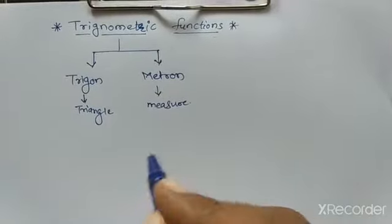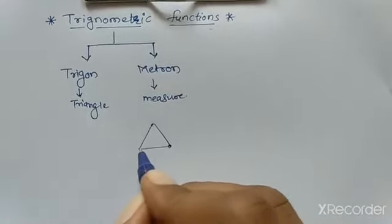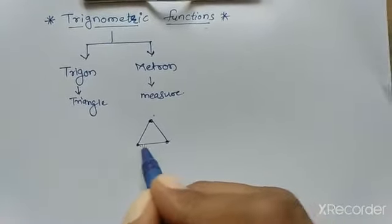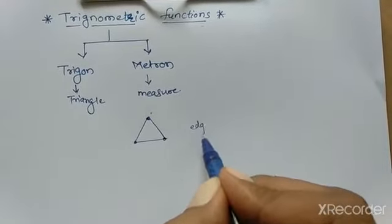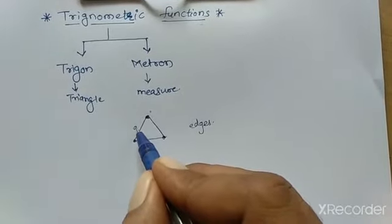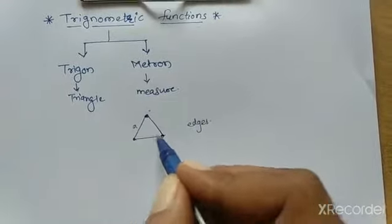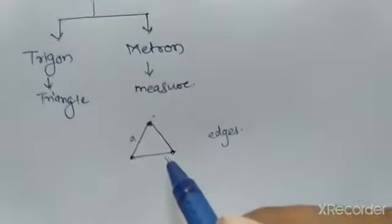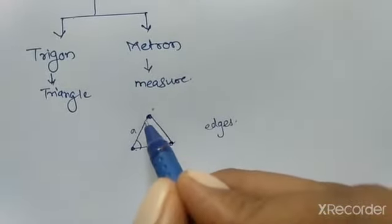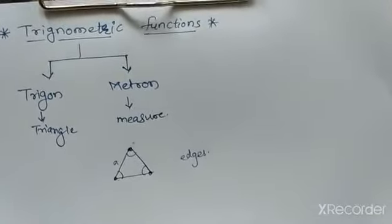When we draw a triangle and consider it, it consists of vertices, which are denoted by points, and sides or edges, which are in between two points. If you consider edge A, it is in between two vertices. So there are three sides for a triangle and three angles. So in this unit, first we study about angles.